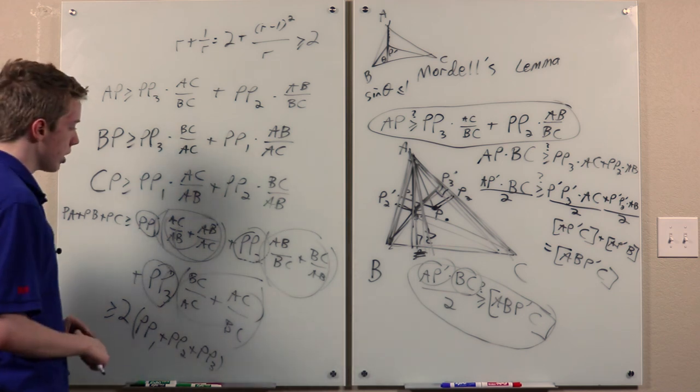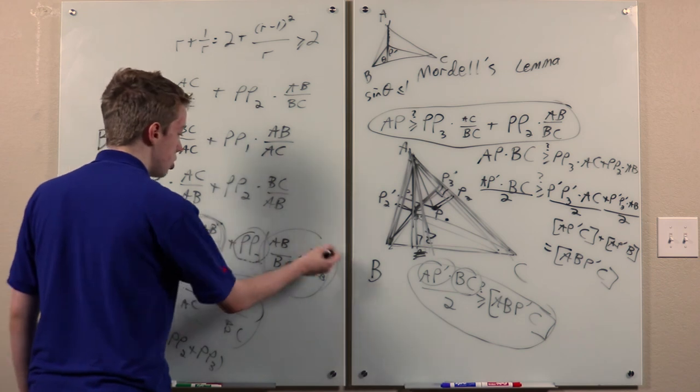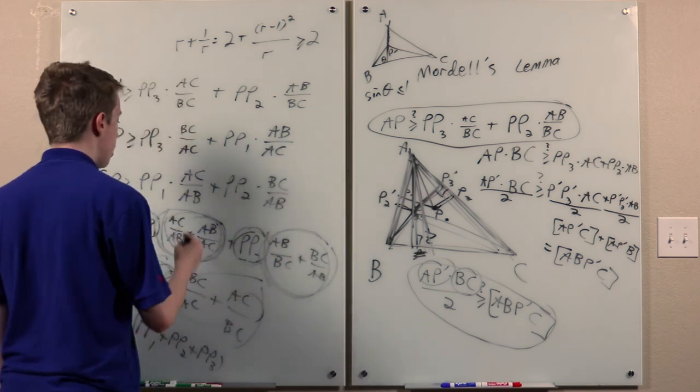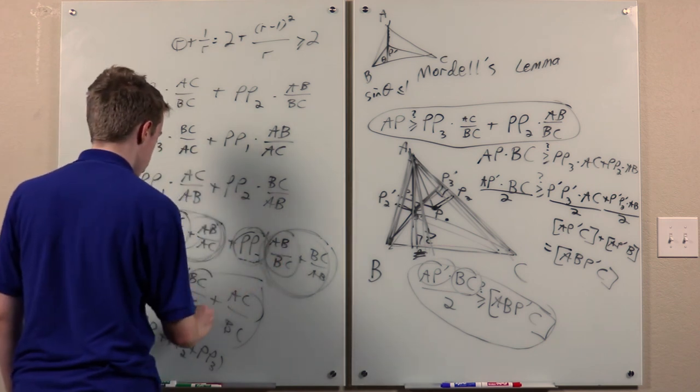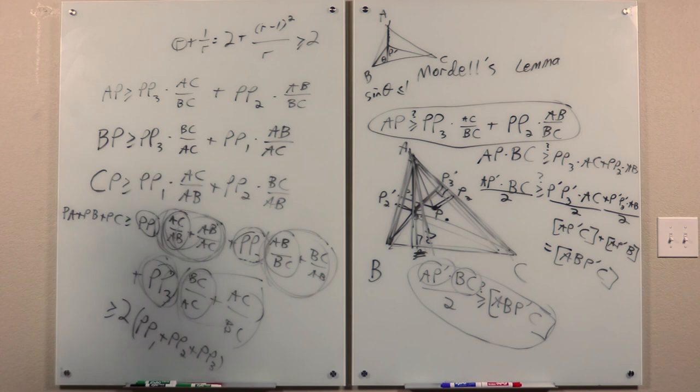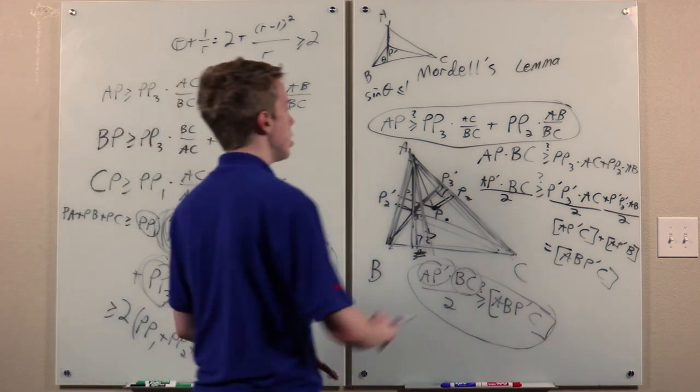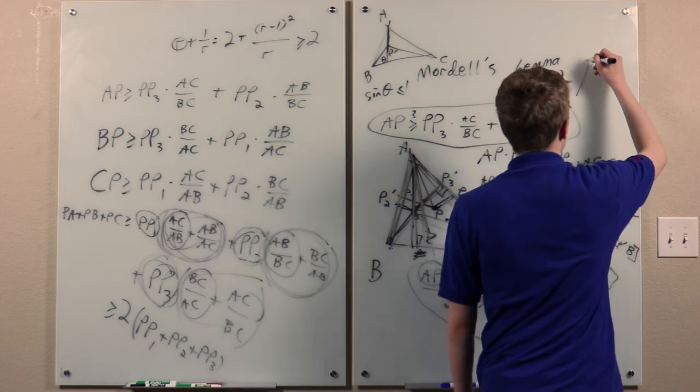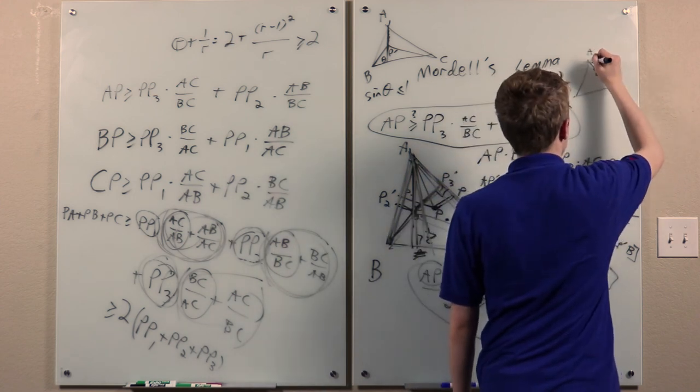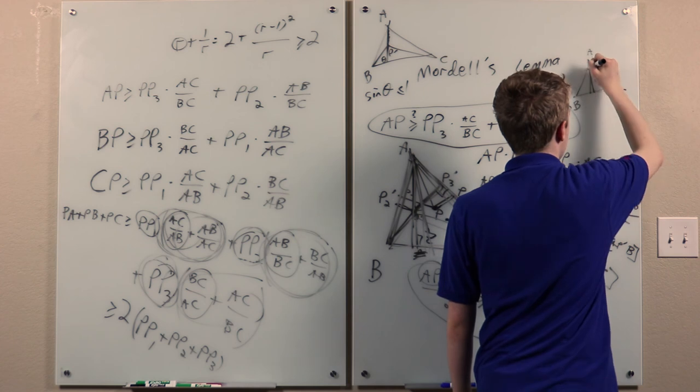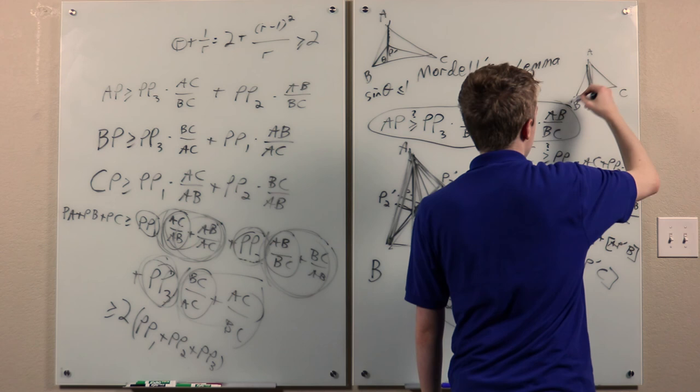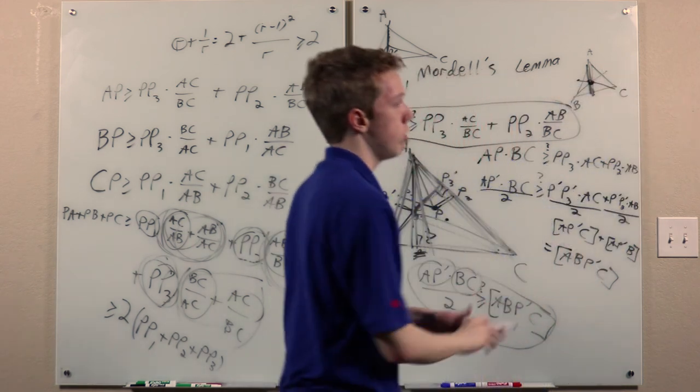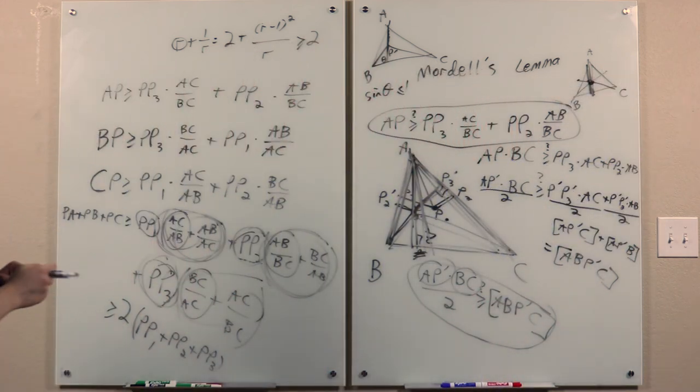And when does equality hold? Well, we would have to have each of these equal to 2, because these are all positive, which implies that r equals 1 in each one. So we need this to be equal to 1, and this, and this, which implies that ABC is equilateral. Furthermore, we must have equality in Mordell's Lemma, which implies that p lies on the reflection of the A altitude over the A angle bisector. In an equilateral triangle, those are the same. So p lies on the A altitude, and the B altitude, and the C altitude, so p is the orthocenter, which is the center. So that proves the Erdős-Mordell inequality with the equality condition.